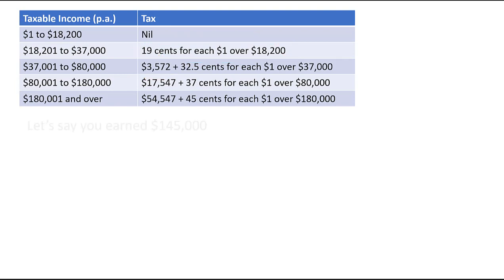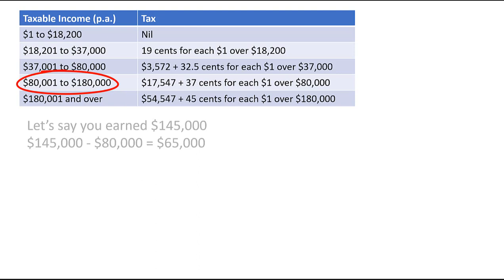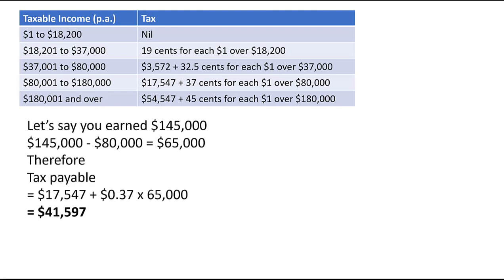Let's do another example. Let's say you earned $145,000. That would put you in the fourth tax bracket between $80,001 and $180,000. You need to pay $0.37 for each dollar over $80,000, so $0.37 times $65,000. The calculation is $17,547 plus 0.37 times $65,000, which comes to $41,597 total tax payable. Notice that even though you earn $145,000, you're only paying $0.37 on the amount over $80,000, not on every dollar.